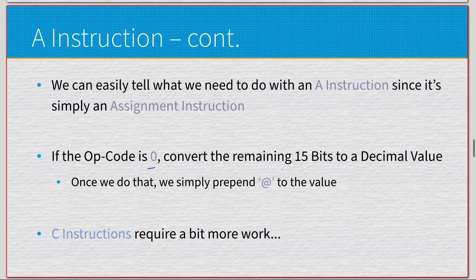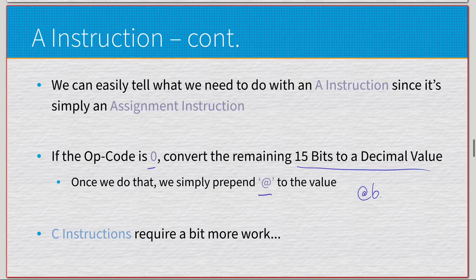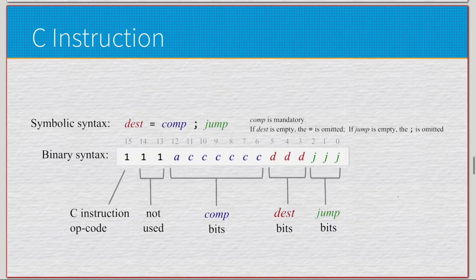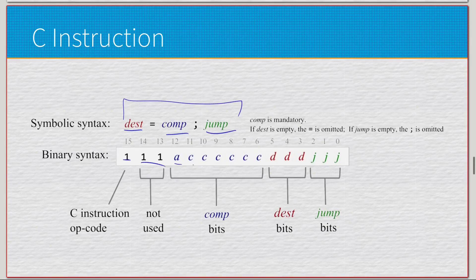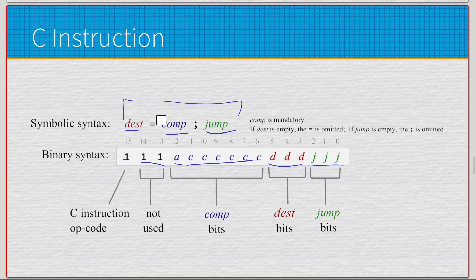For A-instructions, if the opcode is zero, all we have to do is take the remaining 15 bits, translate them to decimal, and prepend an `@` sign. So if those 15 bits give us 6, we get `@6`; if they give us 248, we get `@248`. That's it — not too bad. C-instructions are not as simple. The symbolic syntax is `dest=comp;jump`, and the binary syntax has: opcode one, unused bits always one, an a-bit, six c-bits, three d-bits, and three j-bits.